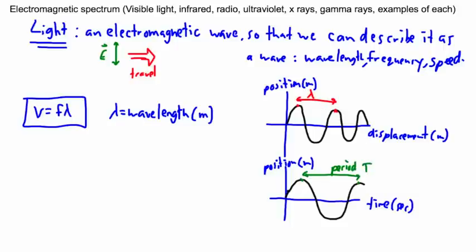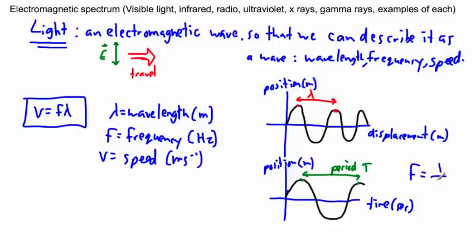The period is written as T. These important equations: frequency is F, measured in hertz or one over seconds, and V is the speed in meters per second. The frequency is one over the period, so I'm just reminding you of these equations.